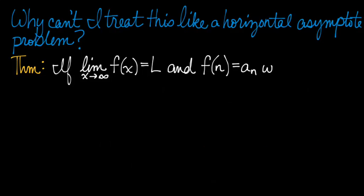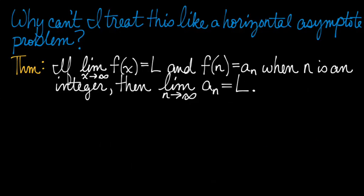This is the theorem that we're talking about. Now, if the sequence can be modeled by a function with real numbers, if it's possible to connect the dots and make it a function of all real numbers, not just integers, then the limit as n goes to infinity of the sequence is equal to the horizontal asymptote of the function.